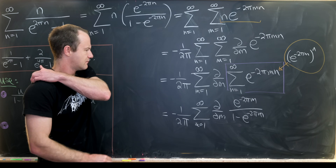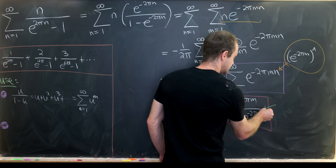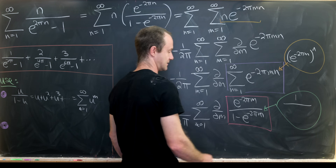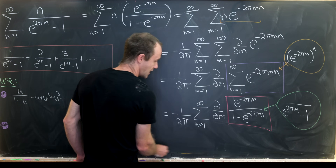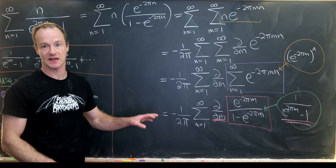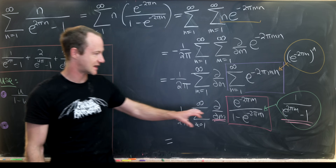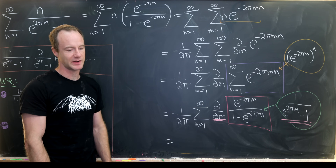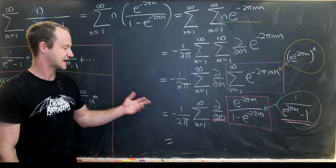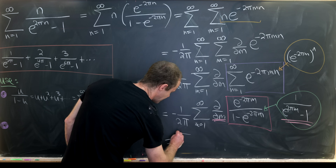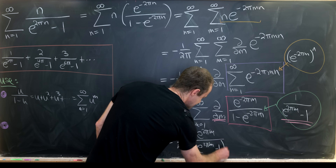Now let's take the derivative of that whole expression with respect to m. By the chain rule, a 2π comes out to cancel the 2π denominator factor, and a minus sign emerges from differentiating the denominator e to the 2πm minus 1. Taking the derivative of e to the 2πm minus 1 also brings down another 2π and an e to the 2πm. All in all, we get the sum as m goes from 1 to infinity of e to the 2πm over (e to the 2πm minus 1) squared.